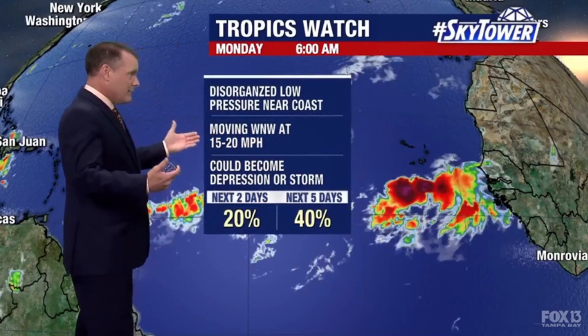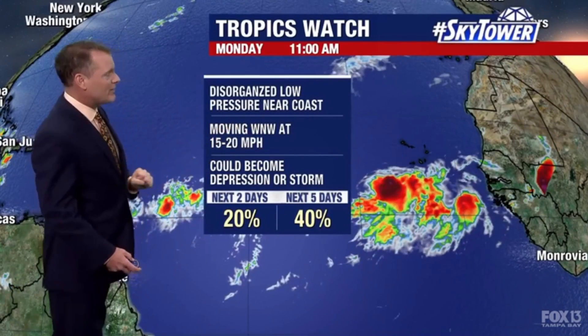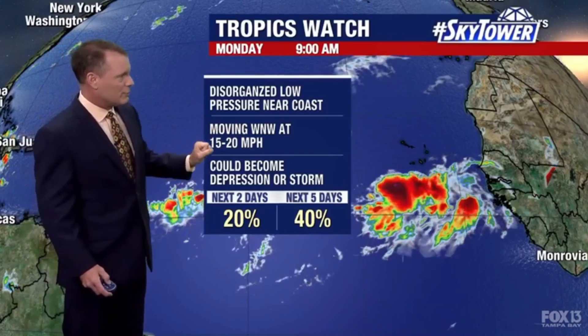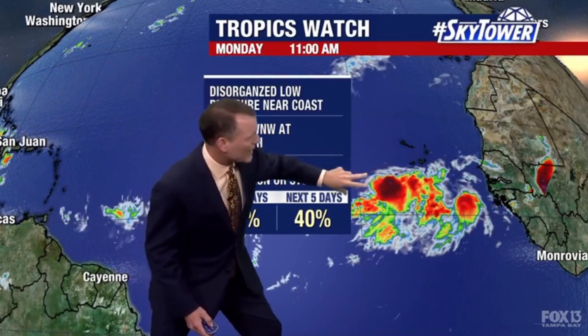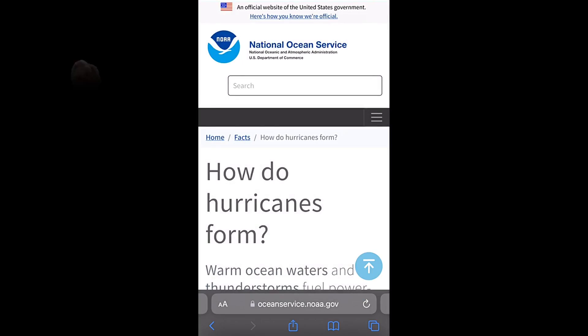This is one disturbance that rolled off the coast of Africa and has the potential to develop into a tropical depression or a tropical storm. If it becomes a storm it's given the name Danielle, moving west-northwest at around 15 to 20 miles per hour. It is disorganized but trying to show some spin — this is typically what happens when these waves roll off the coast of Africa.